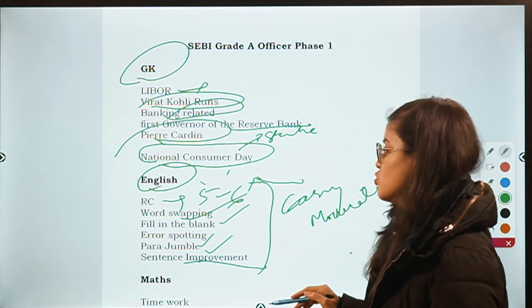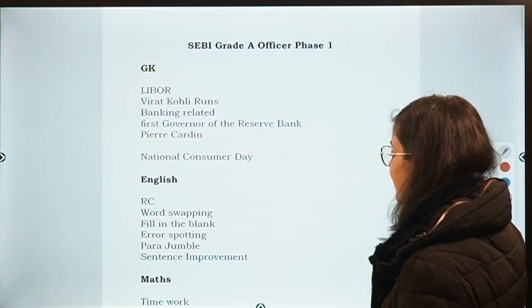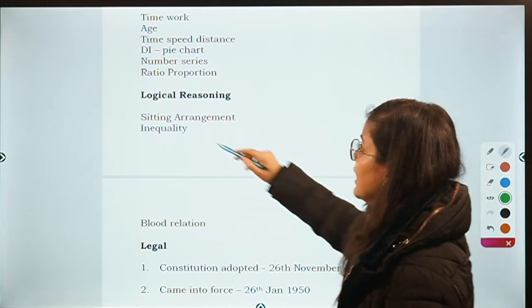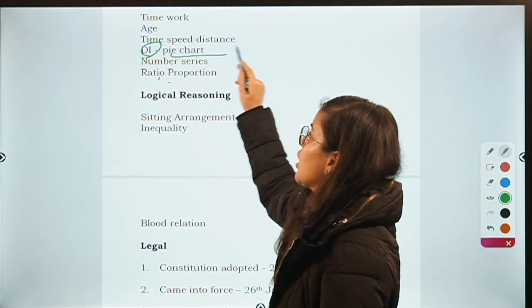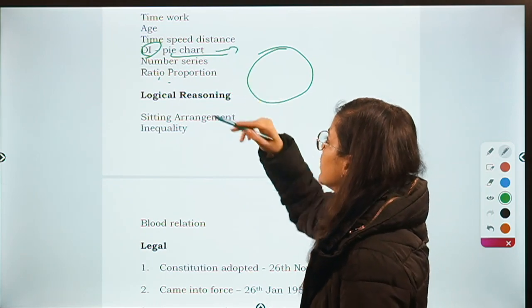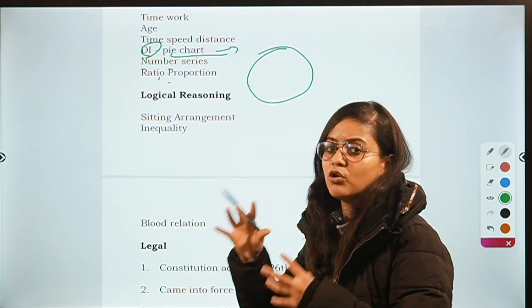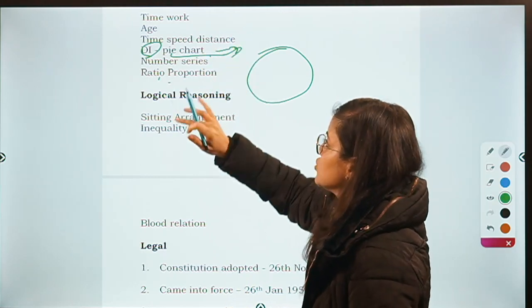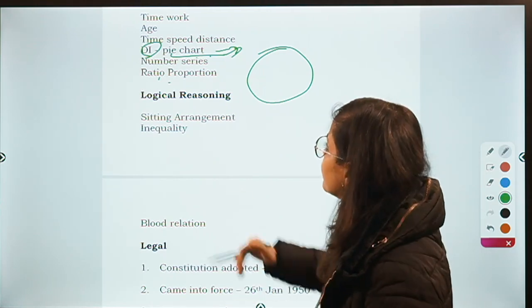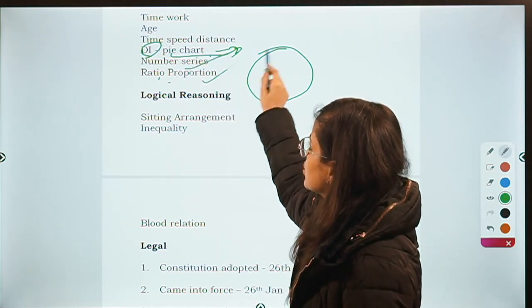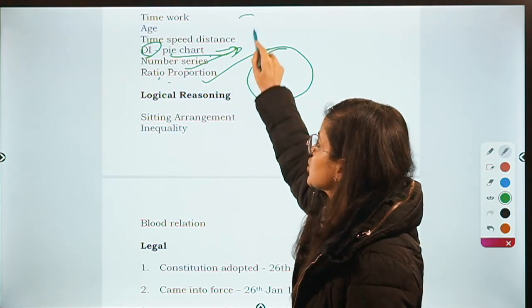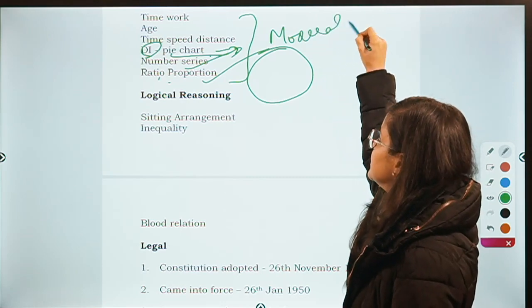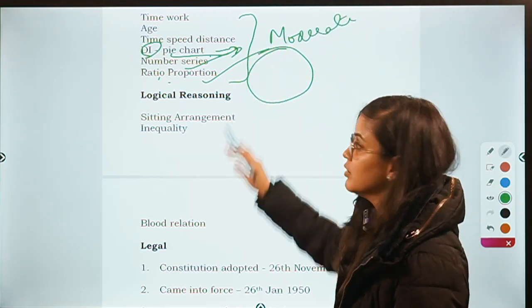Moving on to the Maths section — Maths had time and work, age, and time-speed-distance. Then there was data interpretation where a pie chart was given. There were many questions from here and it had long calculations, which wasted quite a bit of time. Then number series and ratio proportion were other areas from which questions were asked. Maths again was of moderate level — we cannot say it was very easy.